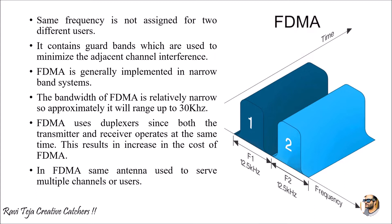Why narrow? The bandwidth of FDMA is relatively narrow, allowing only approximately up to 30 kilohertz of bandwidth — that is why it is considered a narrow bandwidth system. FDMA uses duplexers, which act as a switch: when in transmitting mode, the duplexer acts as a transmitter switch, and when in receiving mode, it acts as a receiver switch.